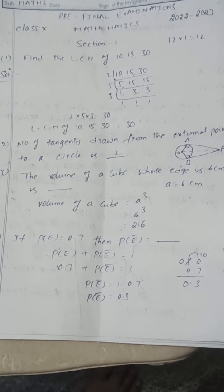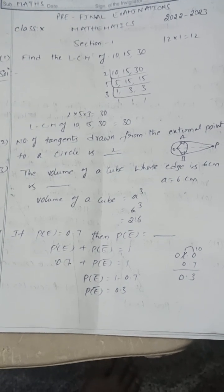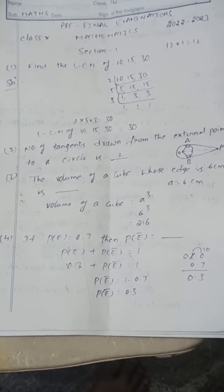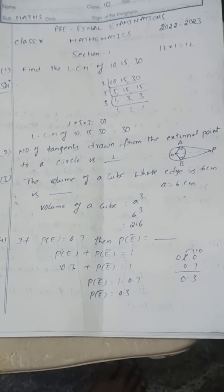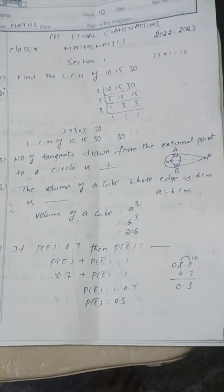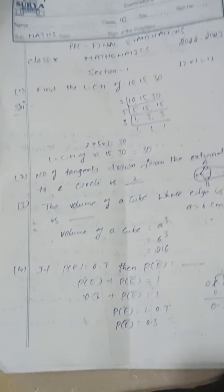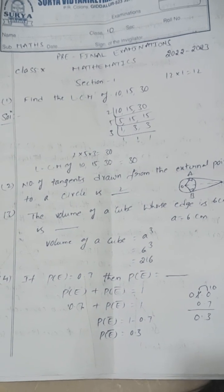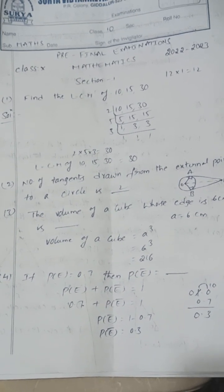Number of tangents drawn from an external point to a circle is 2. The volume of a cube whose edge is 6 — here A equals 6, the volume of a cube is A cubed, that is 6 cubed, that equals 216.